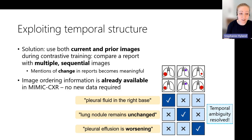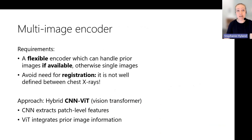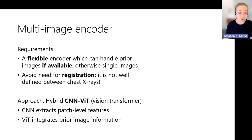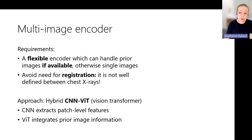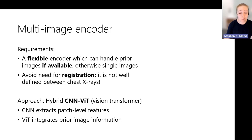However, this does necessitate a multi-image encoder. We need to contrast the representation for one or more images against some text. Our requirements are: an image encoder that is flexible — it can handle prior images if available, but should also work with a single image. We also want to avoid needing registration, particularly because it is not well defined for chest X-rays, which are 2D projections of complex 3D structures.